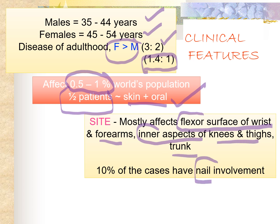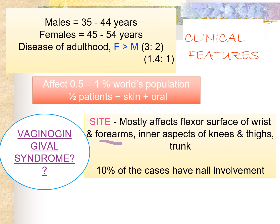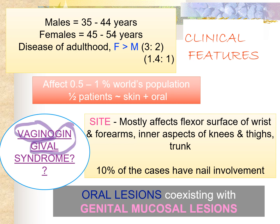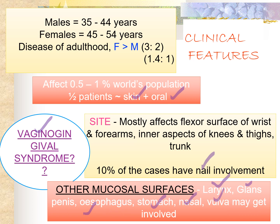An associated syndrome asked in viva is vagino-gingival syndrome, where oral lesions coexist with genital mucosal lesions — involvement of both vagina and gingiva. Other mucosal surfaces that can also be affected include the larynx, glans penis, esophagus, stomach, and nasal mucosa — all these mucosal surfaces may show lesions of lichen planus.